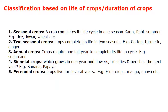Two-seasonal crops complete their life cycle in two seasons, e.g., Cotton, Turmeric, Ginger, Sugarcane. Annual crops require one full year to complete their life cycle, like Sugarcane. Biennial crops take two years for fruiting and to complete the seed-to-seed cycle, like Banana and Papaya. Perennial crops live for several years, like fruit crops and other plantation crops.